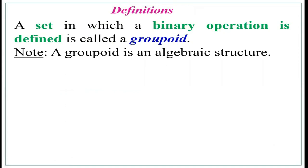A set in which a binary operation is defined is called a groupoid. A groupoid is nothing but an algebraic structure — a set with one or more binary operations. There is no difference between groupoid and algebraic structure. When you say structure, we mention both the set and the operation; in groupoid, we mention only the set which must have a binary operation. Both are one and the same.